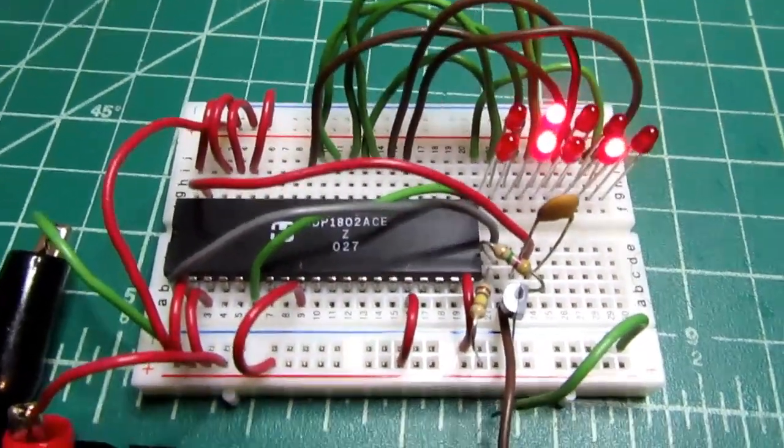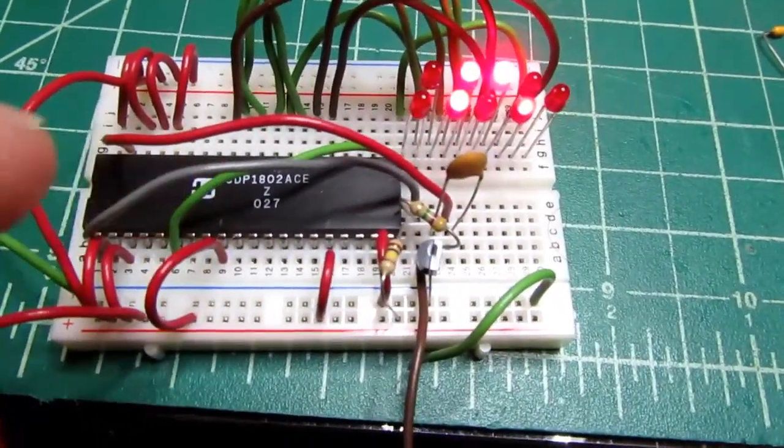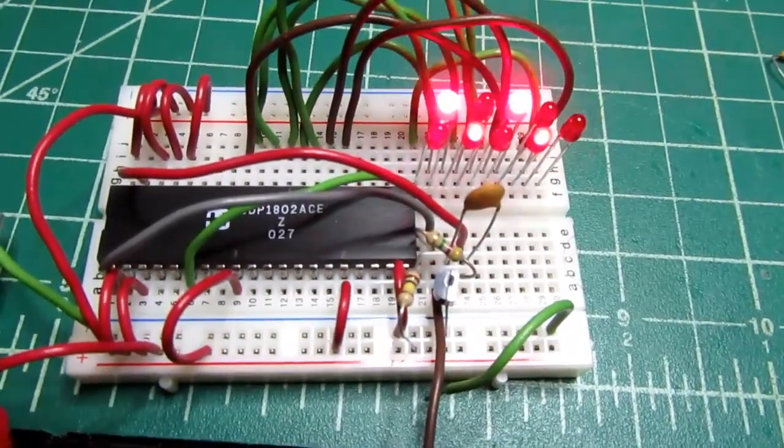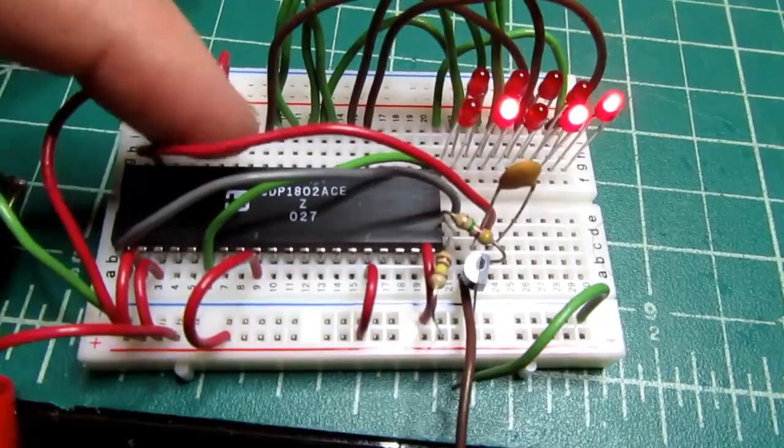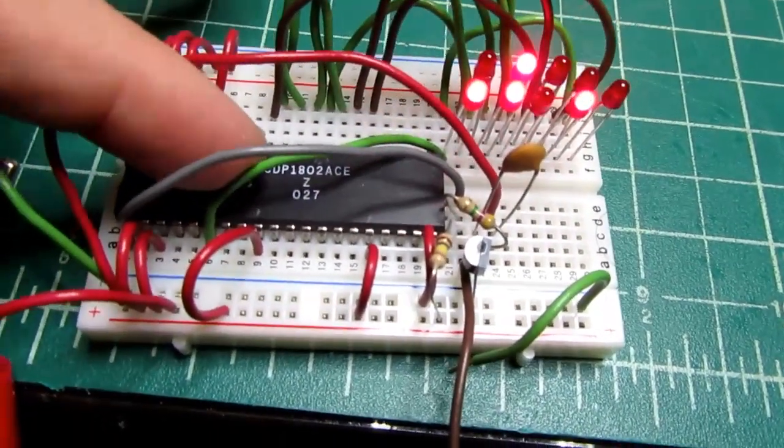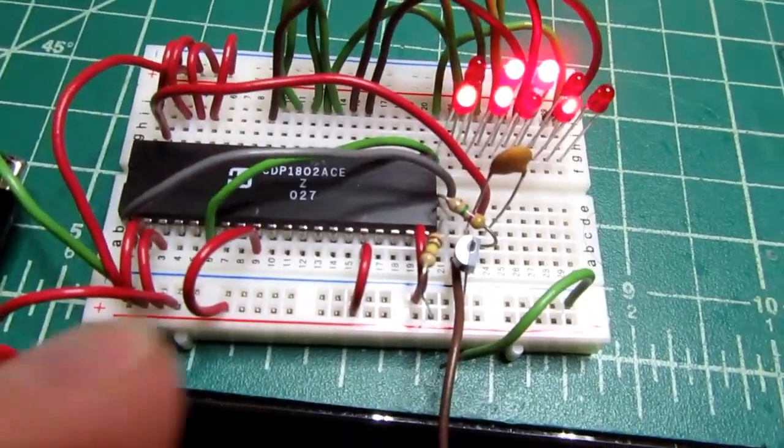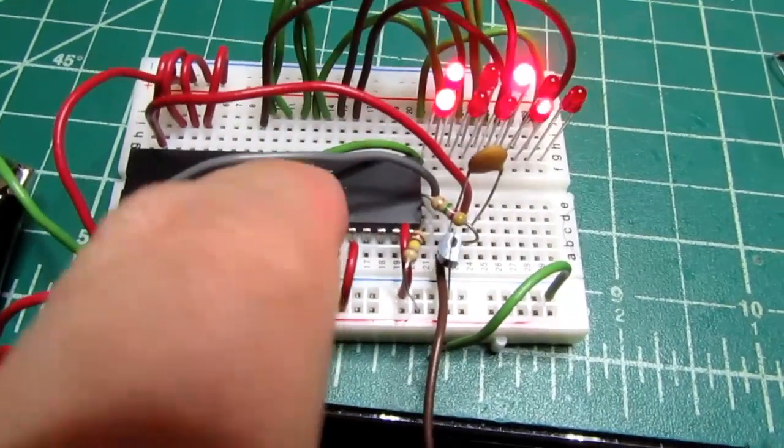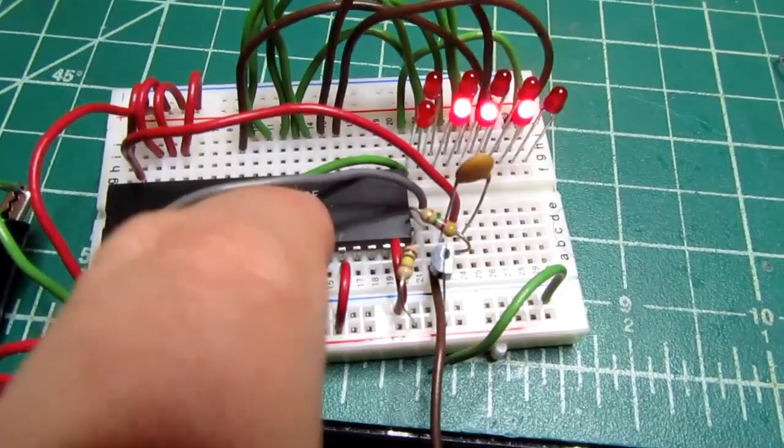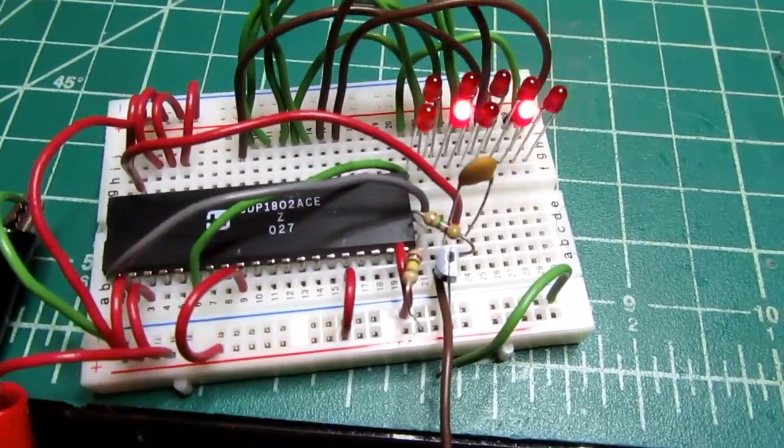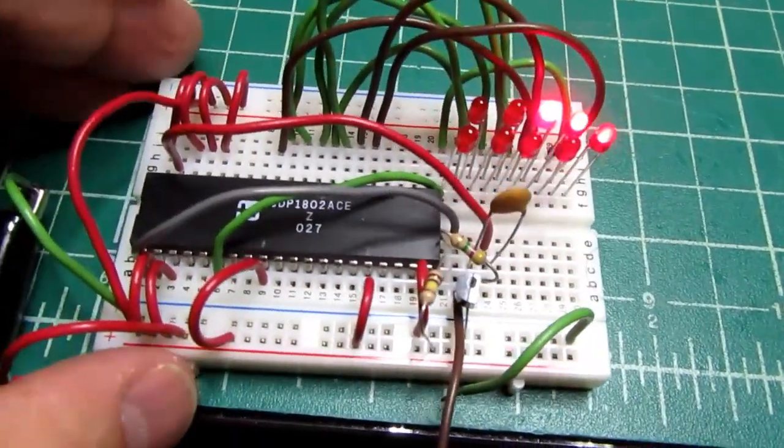Now, just having your finger near the chip should change the data it reads in, but since it's so random anyway, you probably wouldn't notice any difference, but let's just see here. You know, you can't really tell. I'm sure I'm changing the field around there, but you don't know what it was going to do randomly before I put my finger there. So, it's sort of meaningless.